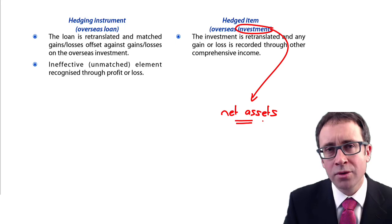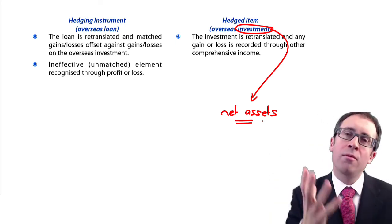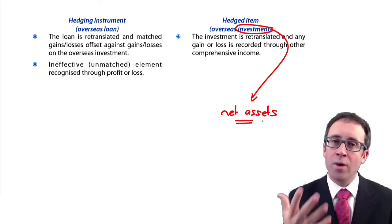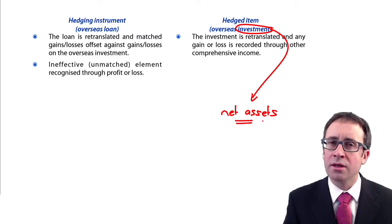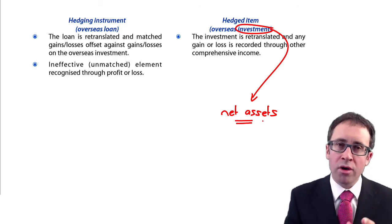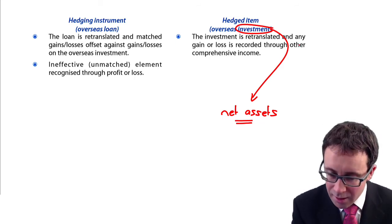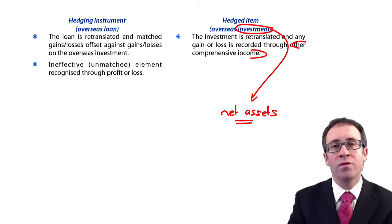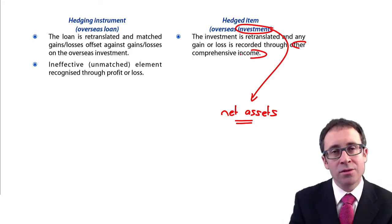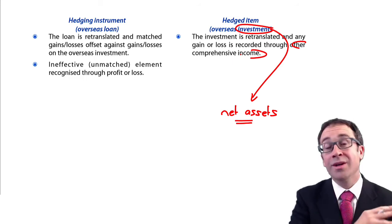Can you remember where those overseas gains and losses went on translation of the overseas subsidiary? Not through profit or loss — they went through other comprehensive income. So any gains and losses on your overseas investments and the overseas net assets of the subsidiary go through other comprehensive income.